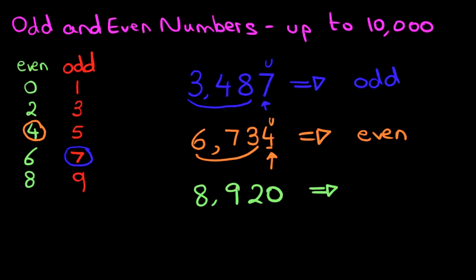Have you worked it out? Great. Now, let's go through it. The only digit we're interested in is the last one, 0. Can you see 0 anywhere here? There it is. It is an even number.